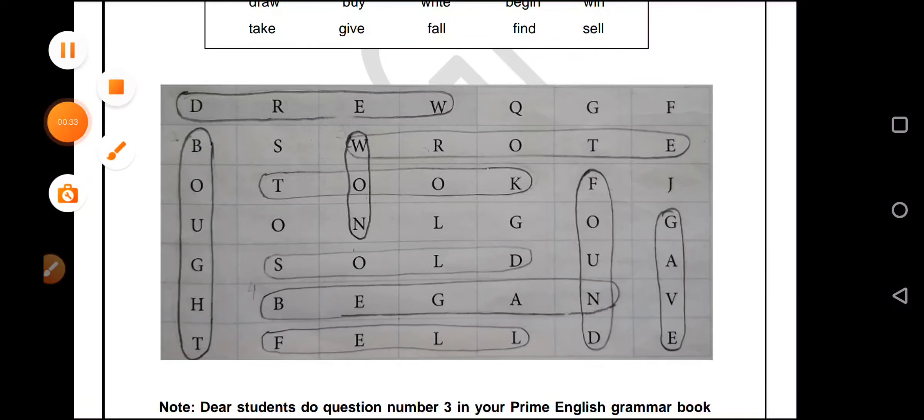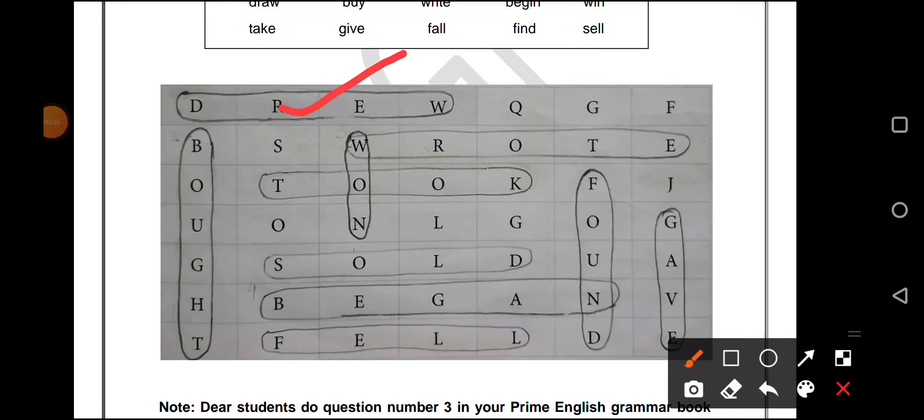Draw will be drew, write, buy will be bought, write will be wrote, begin will be began, win will be won.